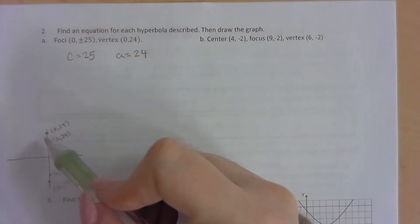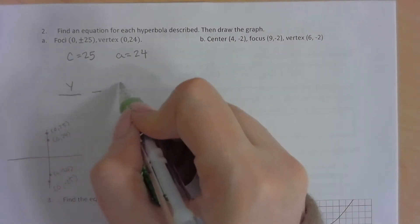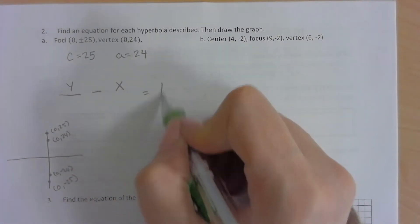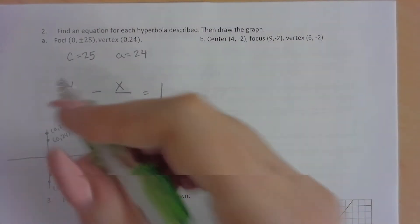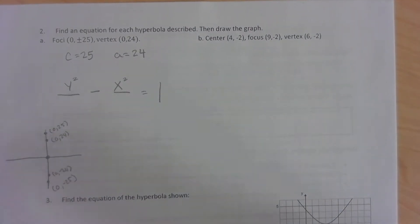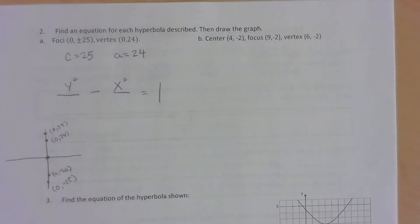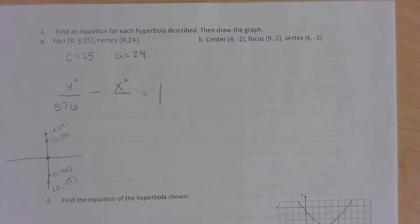It also tells us that our hyperbola is opening up or down, so that's going to make y be first and x be second. That tells us our center is at 0, 0, so it's going to be just x squared, y squared instead of parentheses. The center is at 0, 0. a is always first, so 24 squared is going to go underneath our y. So 24 squared is going to give us 576.